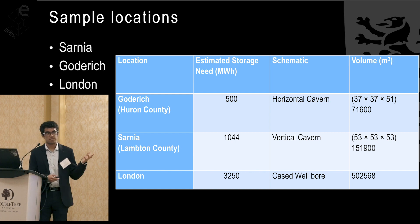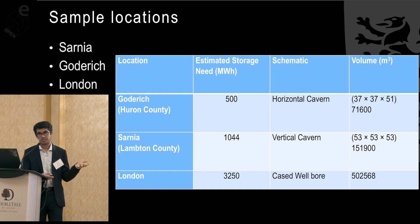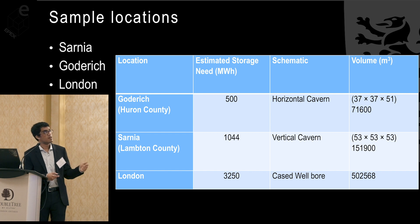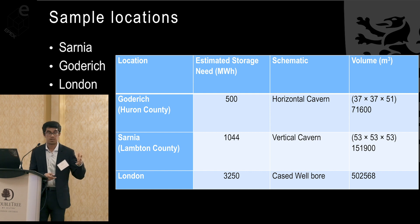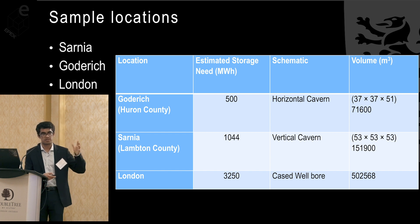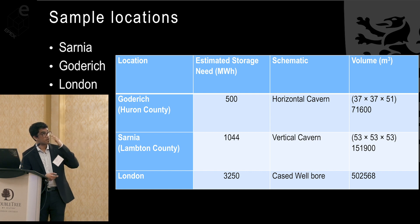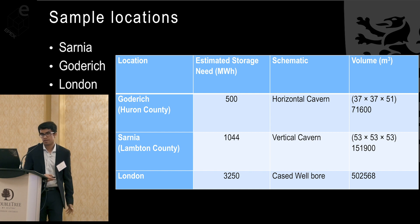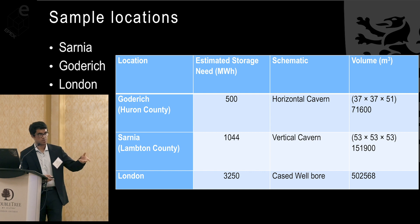To give some context, I've crunched rough numbers using the calculator to illustrate where CAES would fit. We have three locations: Sarnia, Goderich, and London, Ontario. The estimated storage is based on per capita power usage in Ontario multiplied by the local population, then taking 5% of the base load for storage. I use the same mechanical equipment across all three cases. In Goderich, with a 500 megawatt-hour need and a horizontal cavern, I've come up with dimensions of 37 by 37 by 51 meters running along the horizon, suited to the thinner salt deposit.